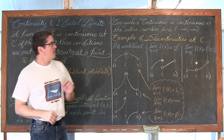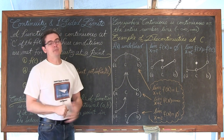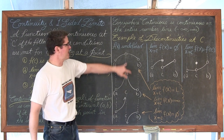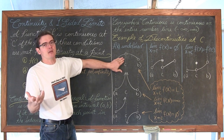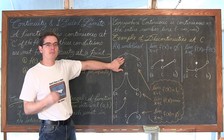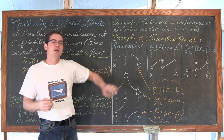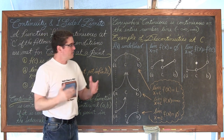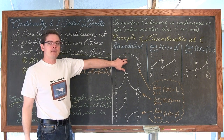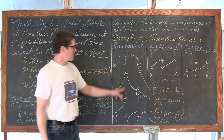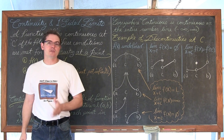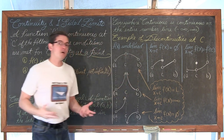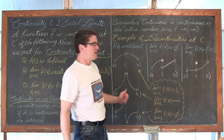Examples of discontinuity at a point: the function could be undefined. One way is a hole in the graph — from rational functions where a factor cancels from numerator and denominator. You still have to account for the value that made the original function undefined, and there you get a hole. Vertical asymptotes come from rational functions where the denominator is zero but does not cancel out. These are examples of the function being undefined, so I would have to pick up my pencil to draw the graph — it is discontinuous at c.